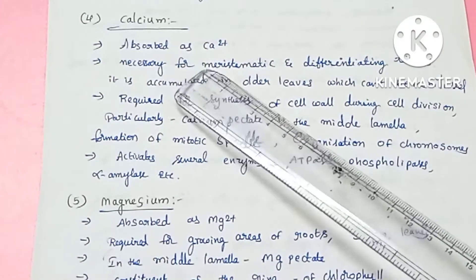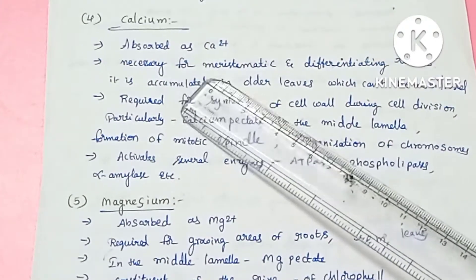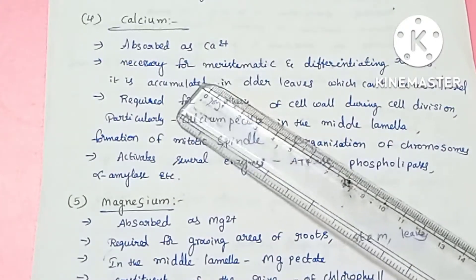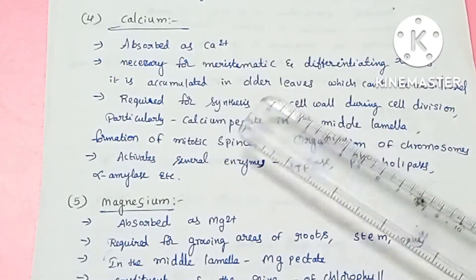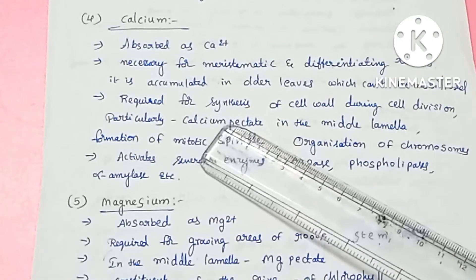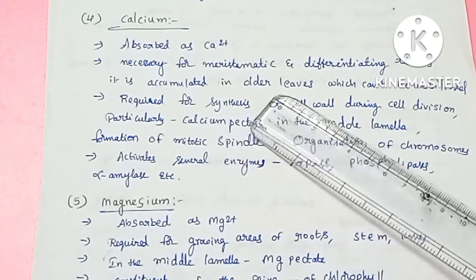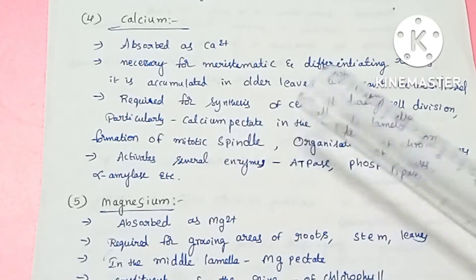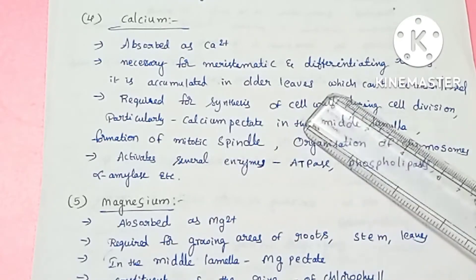The next element is calcium. Calcium is absorbed in the form of calcium ions and is concentrated in meristematic and differentiating tissues.